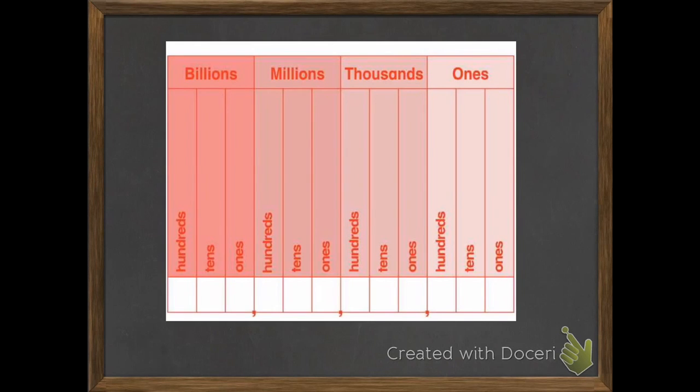Each of those periods has columns for three different digits that go ones, tens, hundreds. For ones, we have our ones, tens, and hundreds.